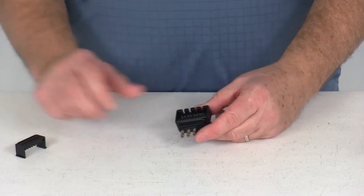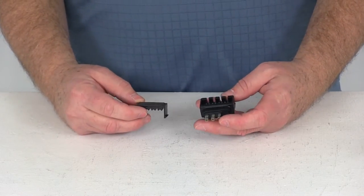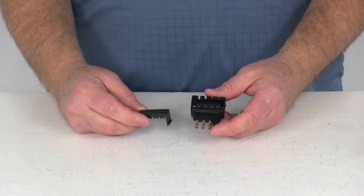But that should do it for the review on part number HMC20031. This is the Hopkins Quick Fix 4-Way Flat Trailer and Connector.